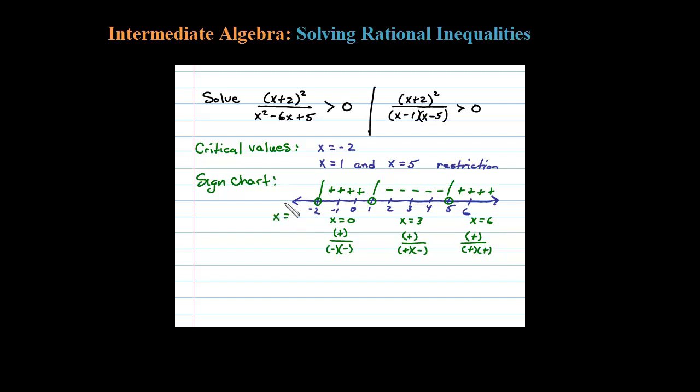And then let's choose a test value in this interval not shown here, let's say -5. Again the numerator is positive—whatever squared is going to be positive. On the denominator I have -5-1 is -6, so that's going to be negative, and -5-5 is negative. So again 2